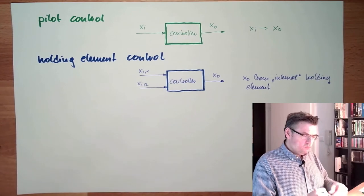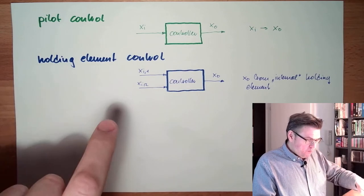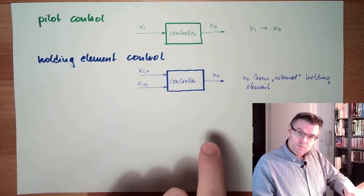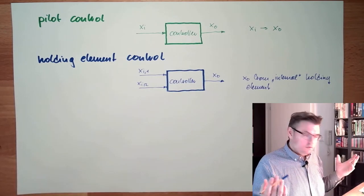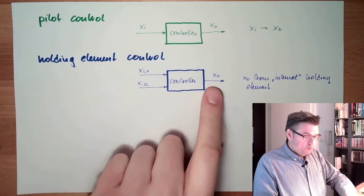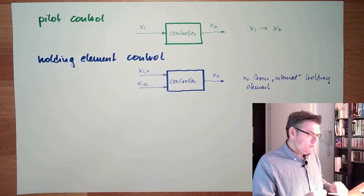One example would be there is a button, you press it, the light goes on. There's another button, you press it, the light goes off. In between there is no input, but the output is still there. It's holding.